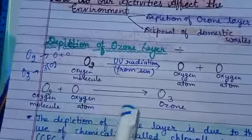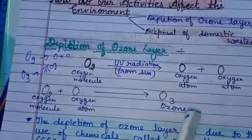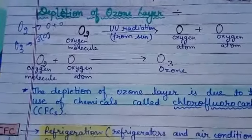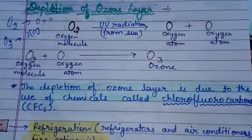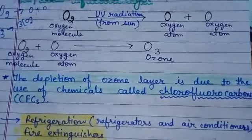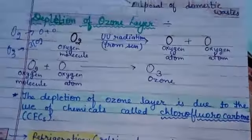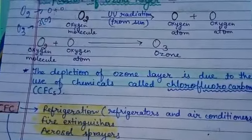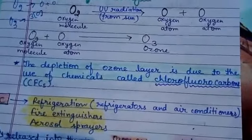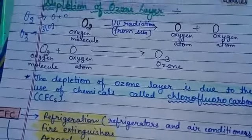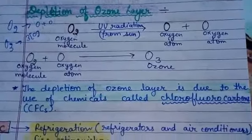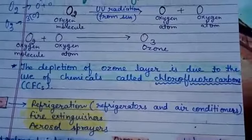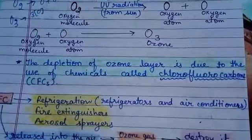What is ozone? At a height between 15 km and 60 km, there is a layer of ozone gas in the upper atmosphere. This ozone layer is very important for the existence of life on Earth because it absorbs most of the harmful ultraviolet radiation coming from the sun and prevents them from reaching the Earth.